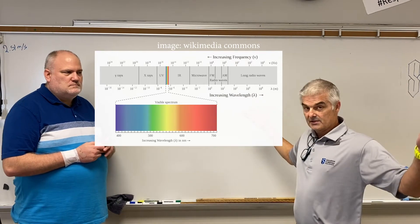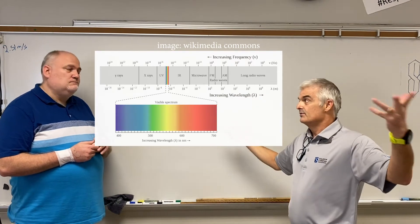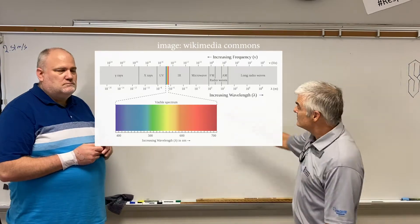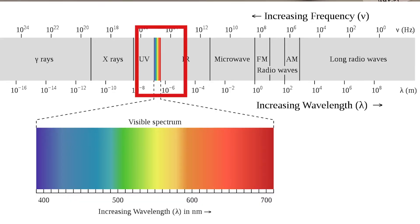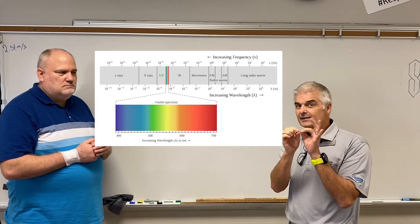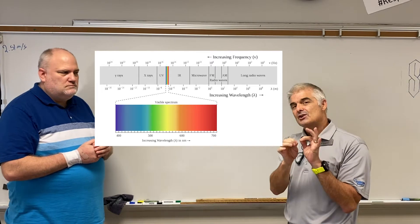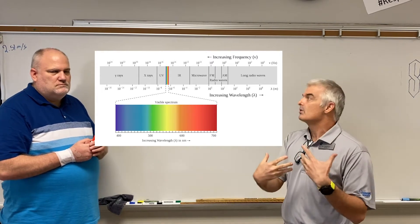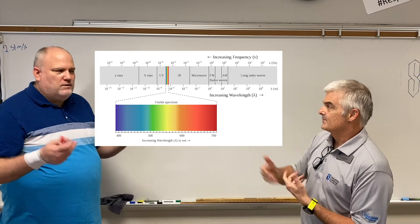You've heard of all these things — microwaves, X-rays, you've probably had an X-ray in your life. But notice this narrow band right here in the middle — that is visible light. We can only see just a narrow band. Our eyes can only detect just a little bit of the actual EMR that's in this room.